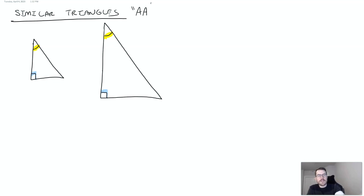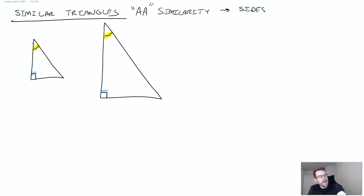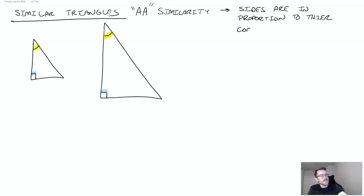A lot of the time we're going to be talking about this angle-angle similarity. We have two angles and the triangles are similar. What does that mean? That means that you have two triangles whose sides are in proportion to their corresponding side.